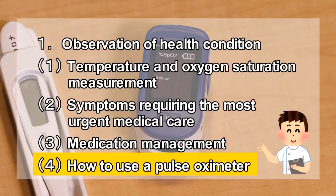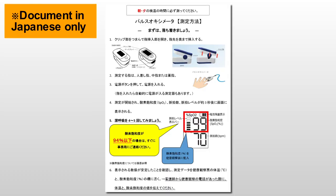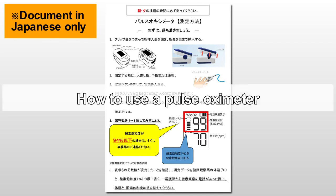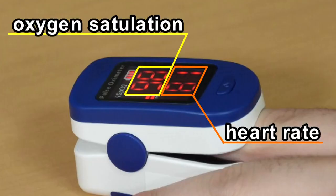Next, we will explain how to measure your oxygen saturation. Please go back to the table of contents and open the pulse oximeter measurement method page. Oxygen saturation indicates how much oxygen is contained in the blood. The figure in the upper row shows oxygen saturation, and the normal level is 95% or higher.